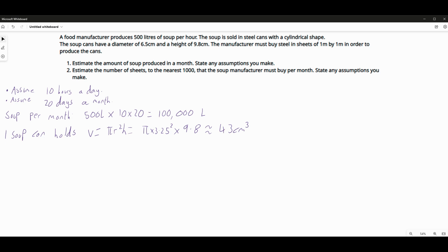So we can work out the number of cans we need in a month. We need to divide 100,000 litres by 43 centimetres. So the number of cans is equal to 100,000 litres divided by 43 centimetres cubed. Those units aren't consistent. So we're going to have to convert one of these units into the other. Think about litres for a second. There are 1000 centimetres cubed in one litre.